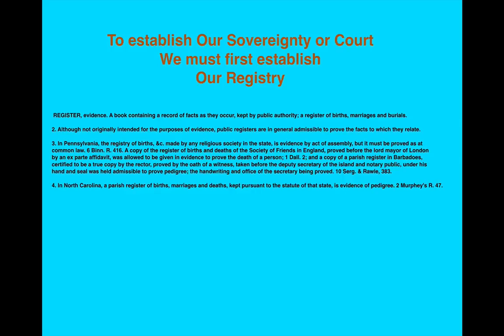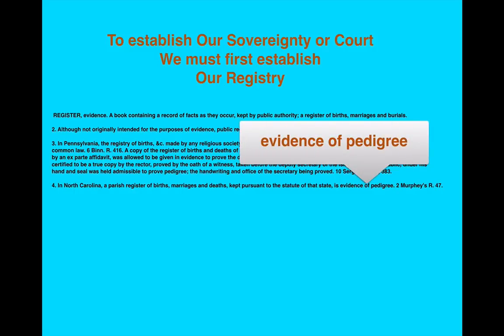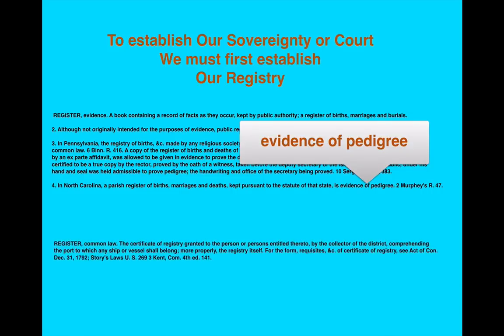The next part is quite interesting — I'll let you pause the video to read that — but look at number four here: in North Carolina, a parish register of births, marriages, and deaths kept pursuant to the statute of that state is evidence of pedigree. Evidence of pedigree. A register is evidence — that's evidence of our pedigree. The register under common law: the certificate of registry granted to the person or persons entitled thereto by the collector of the district, comprehending the port to which any ship or vessel shall belong. If we're going to be amending our record, we will need to be identifying our vessel.